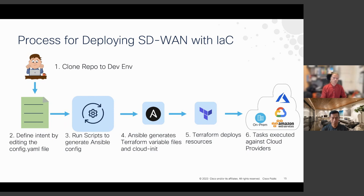In step four, Ansible uses those generated configuration files to create Terraform variable files and bootstrap configuration files in cloud-init format. Terraform then takes this input and calls the actual public cloud APIs to instantiate virtual machines based on the configuration we started with.